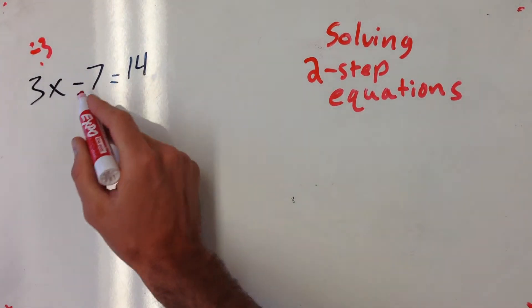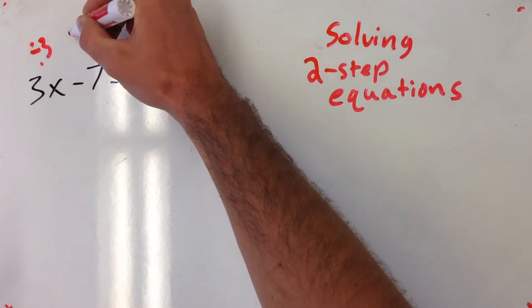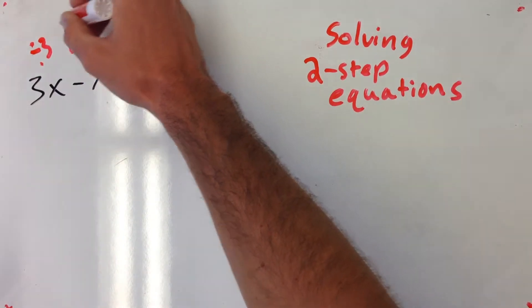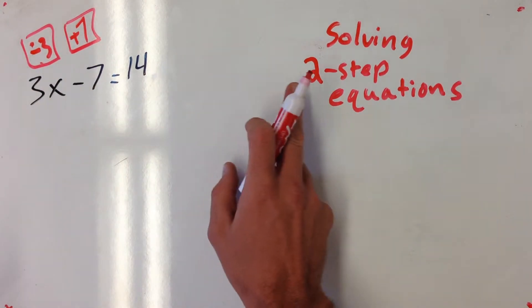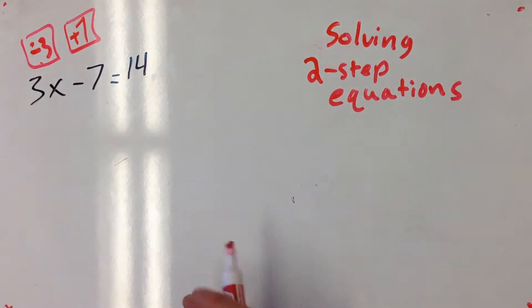I also know at some point, since it's being subtracted by 7, I'm going to have to add 7 to both sides. It's got two things that are happening to it. That's why we call it a two-step equation. So these are going to be my two steps.